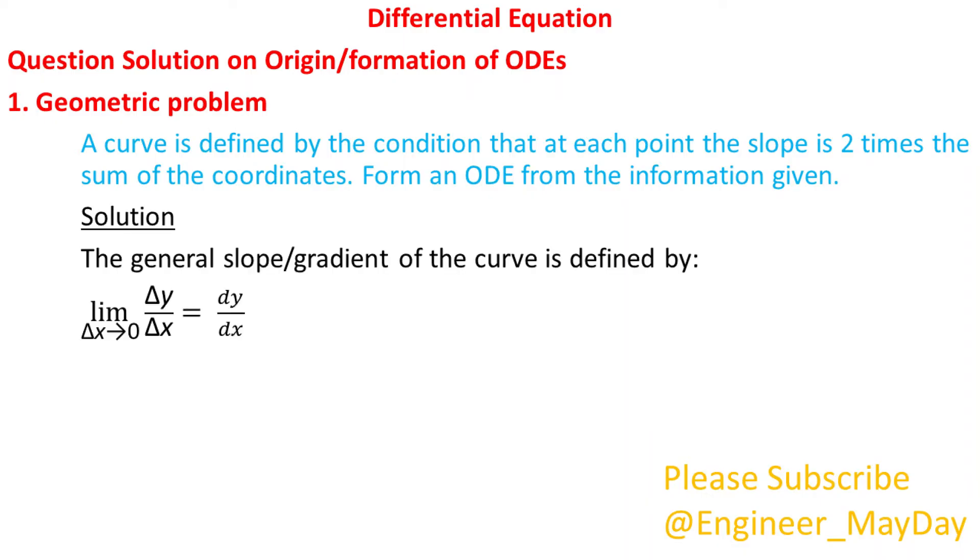Solution. The general slope or gradient of the curve is defined by limit of Δy over Δx as Δx approaches 0 which equals dy over dx. Thus, from the given information, we have dy over dx equals 2 into x plus y.